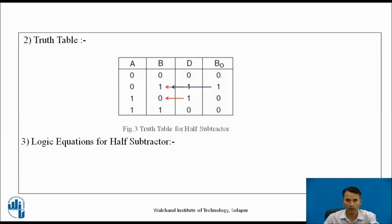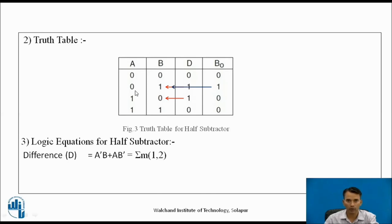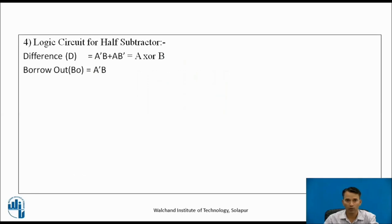From the truth table we can write logic equations for the half subtractor. We have two outputs. For difference d, the equation is: D = A̅B + AB̅, which is written as Σm(1,2). For borrow-out, we get output for only one combination, so the equation is: B0 = A̅B, written as Σm(1).